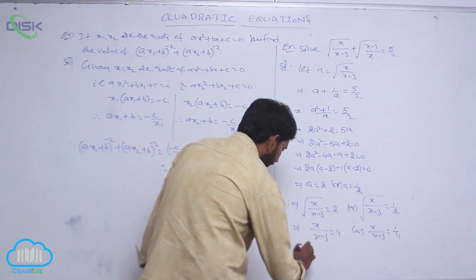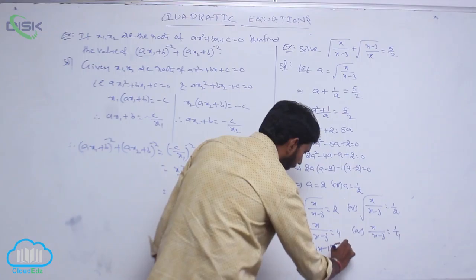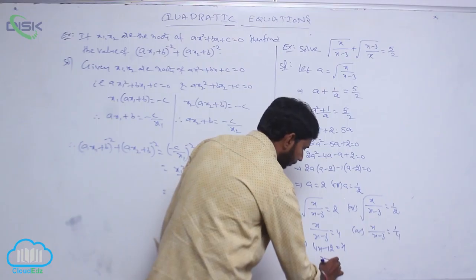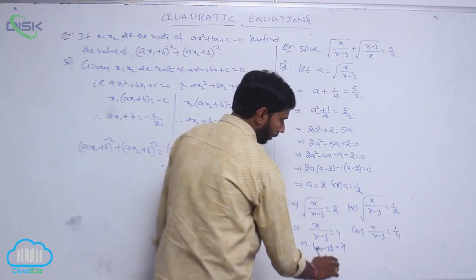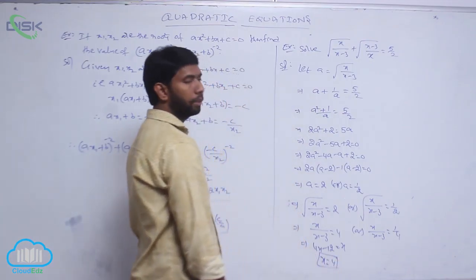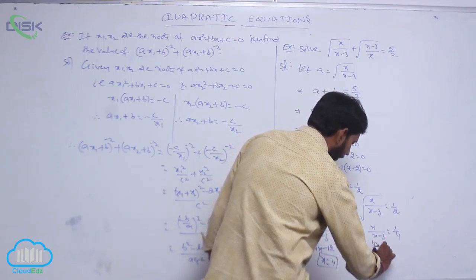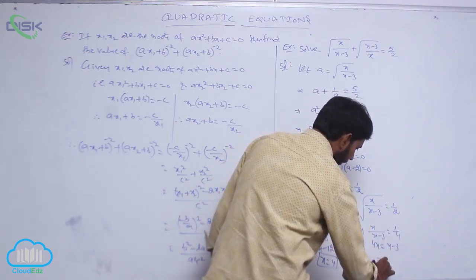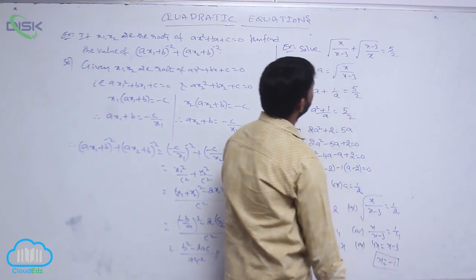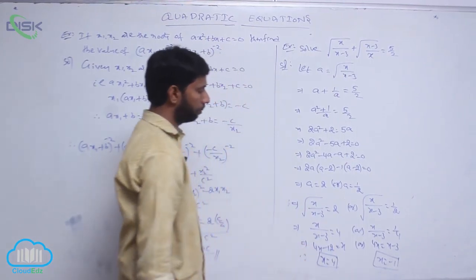Simplifying: from x/(x−3) = 4, we get x = 4(x−3), so 4x − 12 = x, giving x = 4. From x/(x−3) = 1/4, we get 4x = x − 3, so 3x = −3, giving x = −1. Therefore the values of x are 4 and −1.